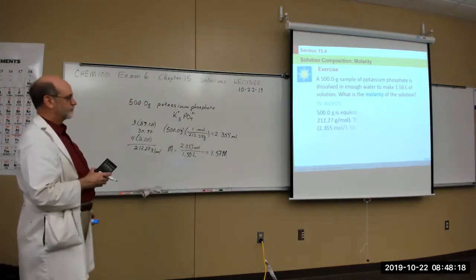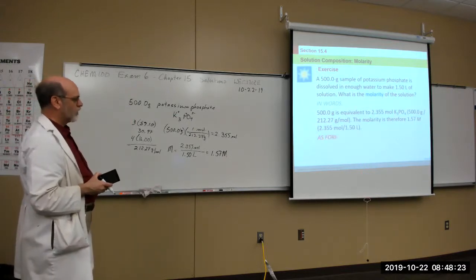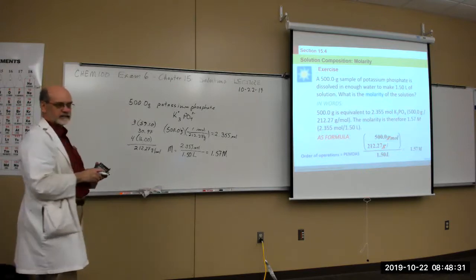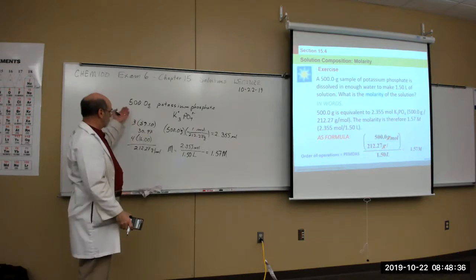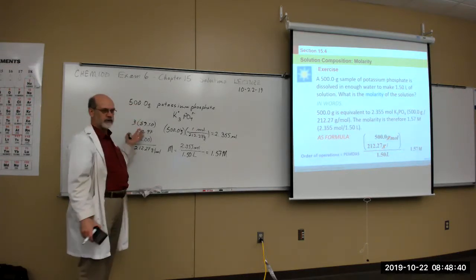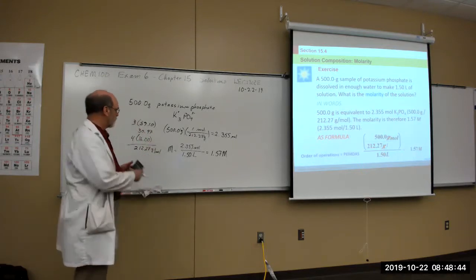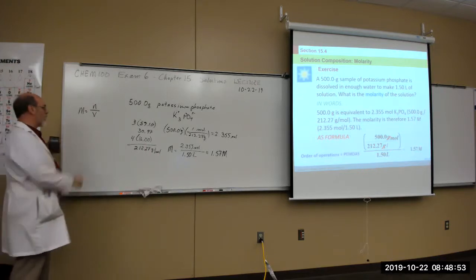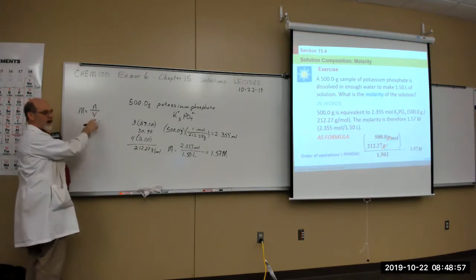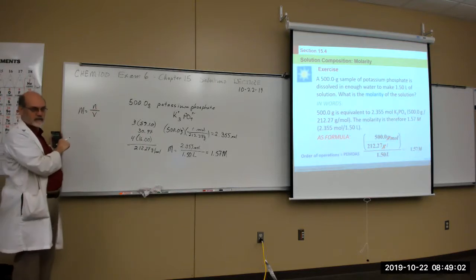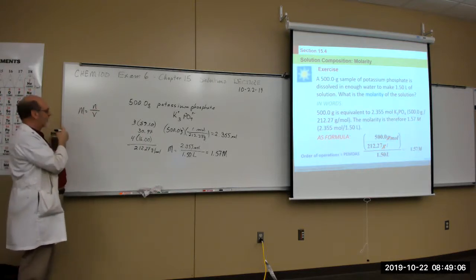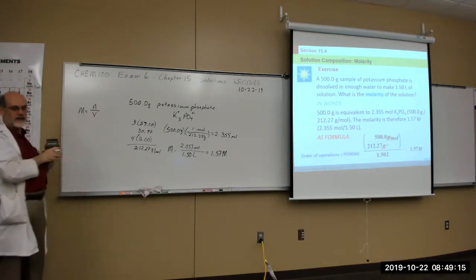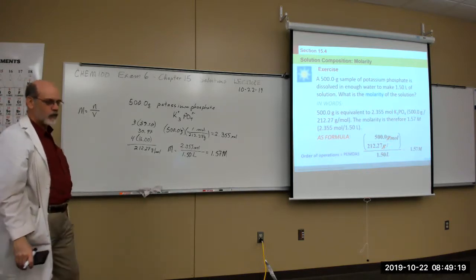Molarity is a formula: M = moles/volume. If you know two of the three variables, you can find the third. Given a 10 molar sugar solution, what volume do you need to have 2 moles? Rearranging: V = moles/M = 2/10 = 0.2 liters, which is 200 milliliters.